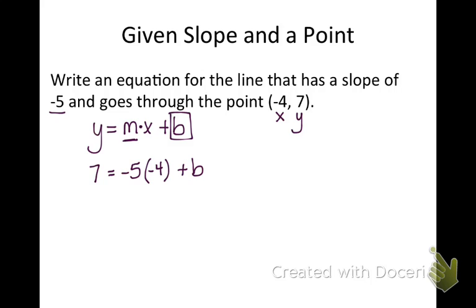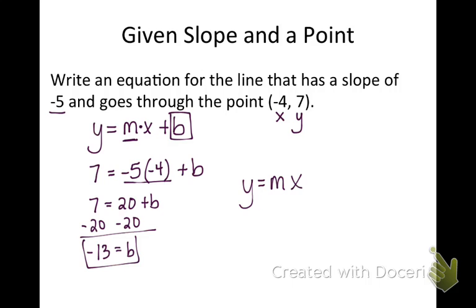Now I'm going to solve this for b, and it is always going to be the exact same steps. We're going to multiply these two together, so we get a positive twenty, and then we will subtract this over minus twenty. So b equals negative thirteen. My last step is to replace my m and my b with my slope and my y intercept. So I get y equals negative five x minus thirteen. That's the equation of my line.